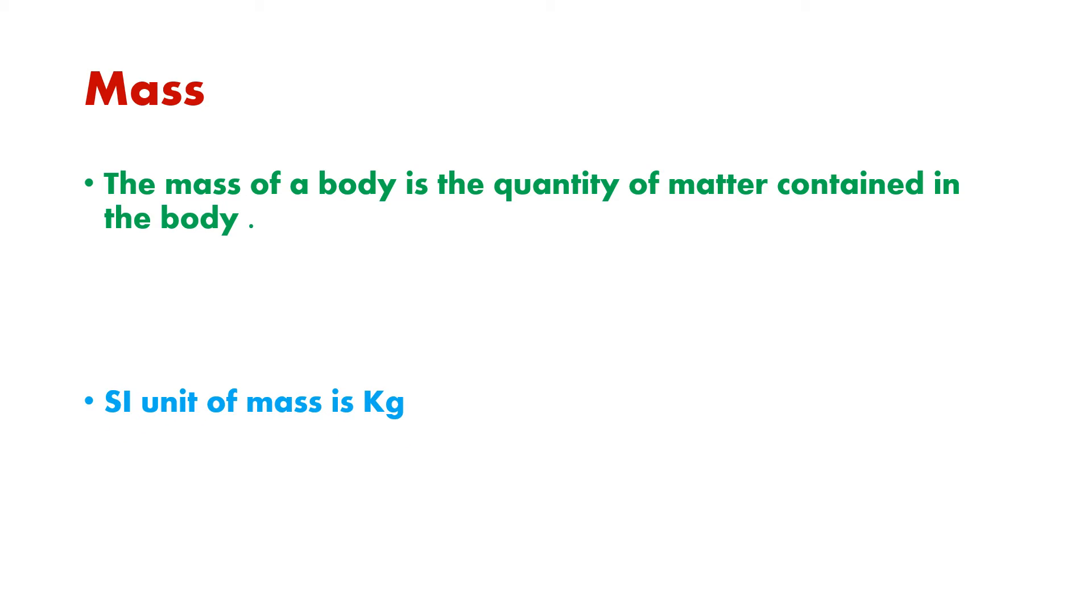Then we have mass. You know what is mass? It is the quantity of matter contained in the body. So the things around us, they all have mass and they occupy space. That is why we call them as matter. So how much matter is contained in a body that is defined as mass. And SI unit of mass is kilogram.